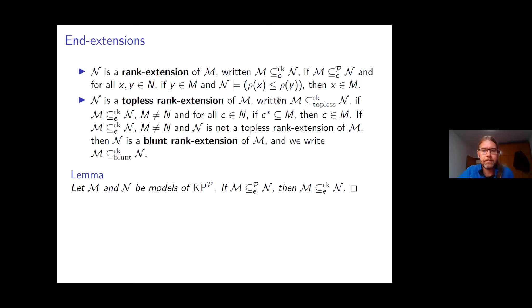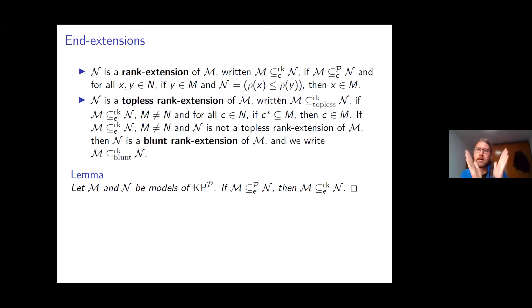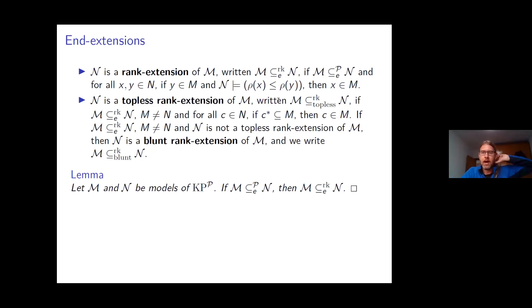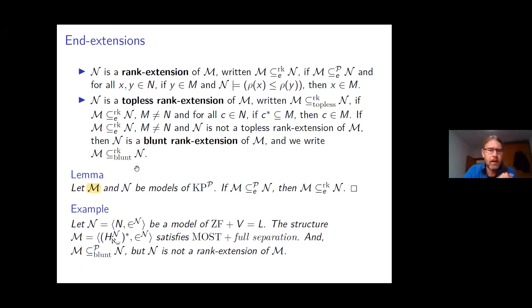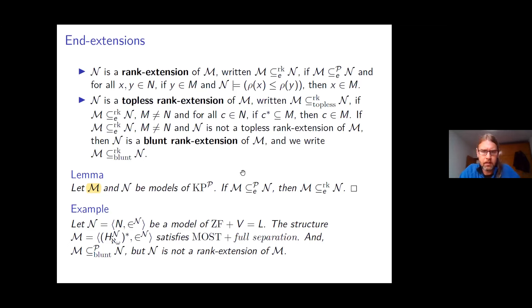Note that if M and N are both models of KPP, then power set preserving and rank extensions coincide — they're the same thing. This is because a model of KPP is a union of ranks, so when you take a power set preserving end extension you really are adding to the top of those ranks. However, this is not necessarily the case if M does not satisfy KPP. I have two examples showing that weakening either the collection or the foundation in KPP breaks this correspondence.